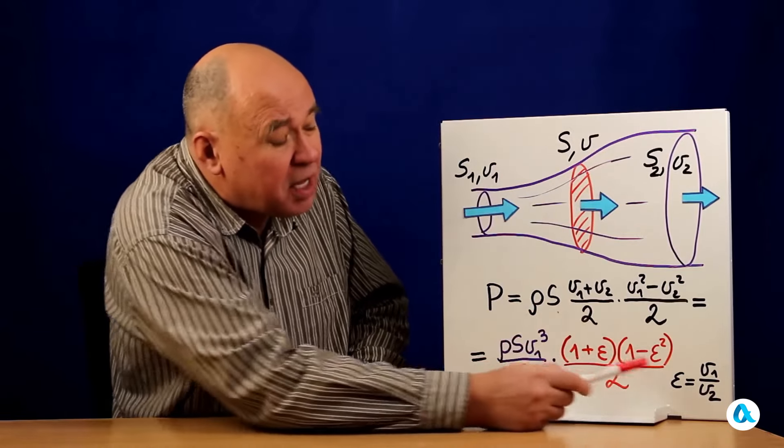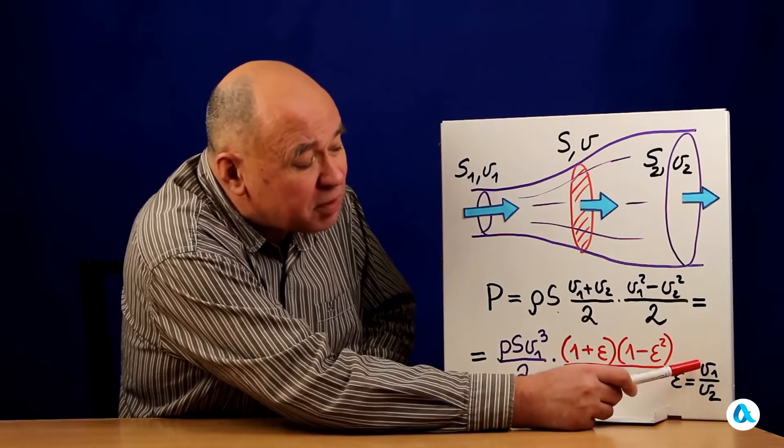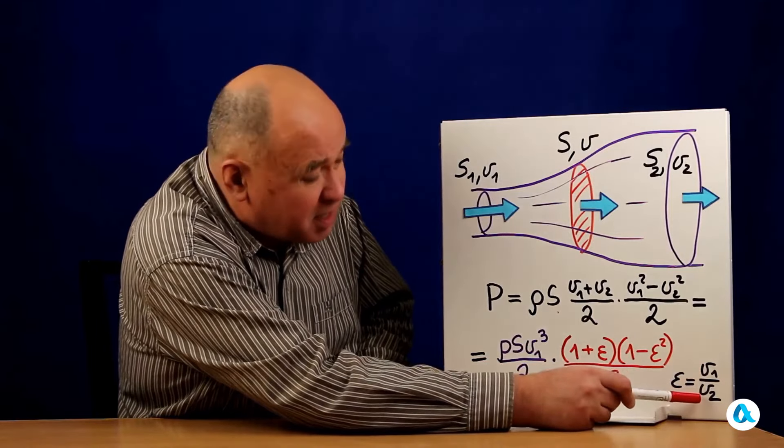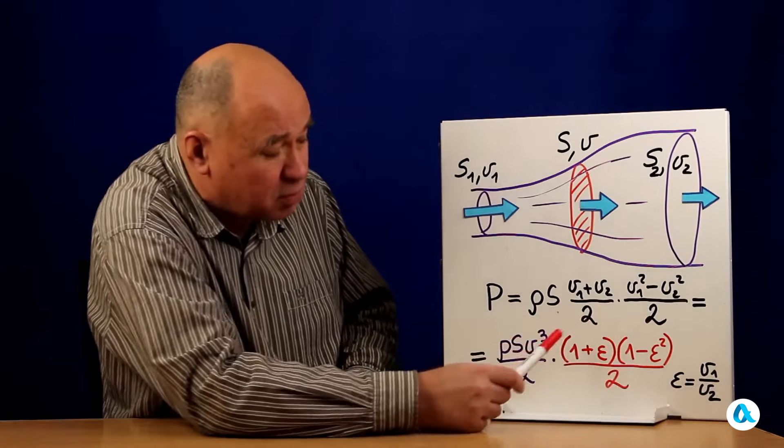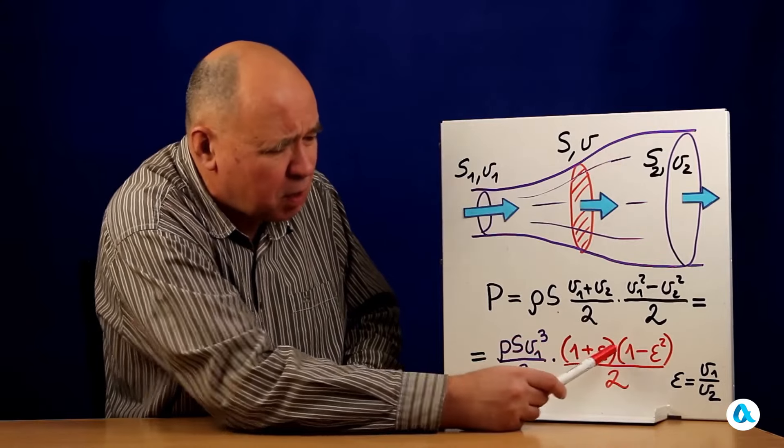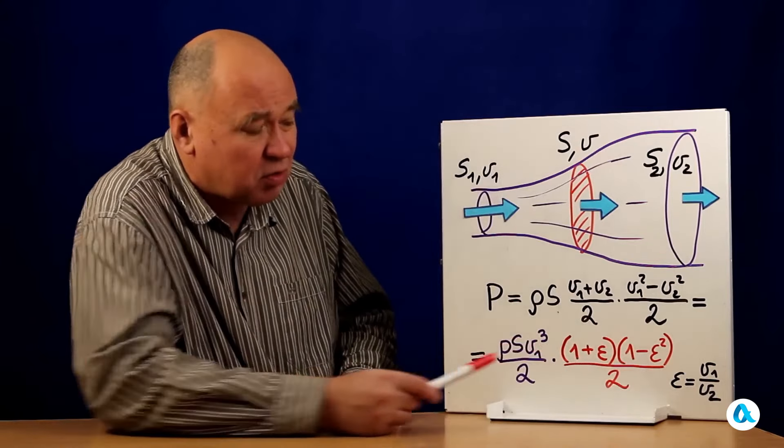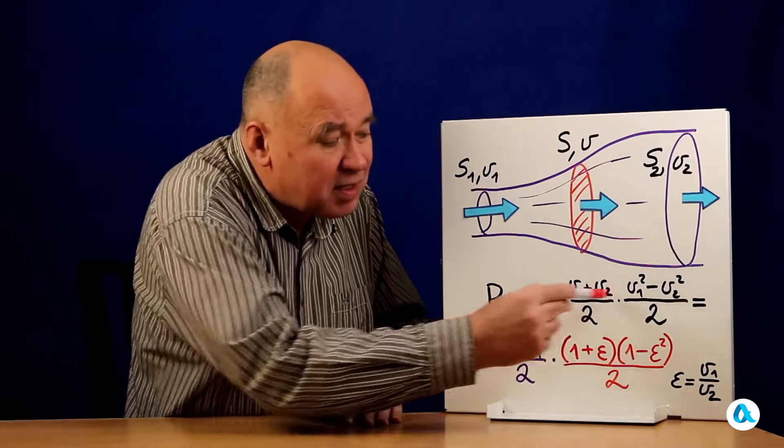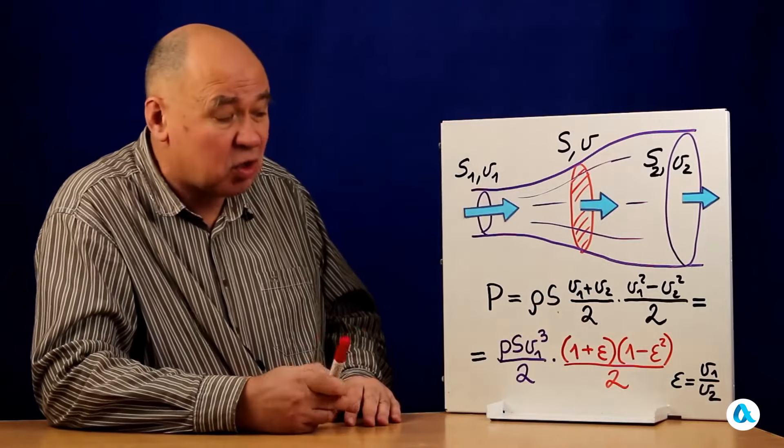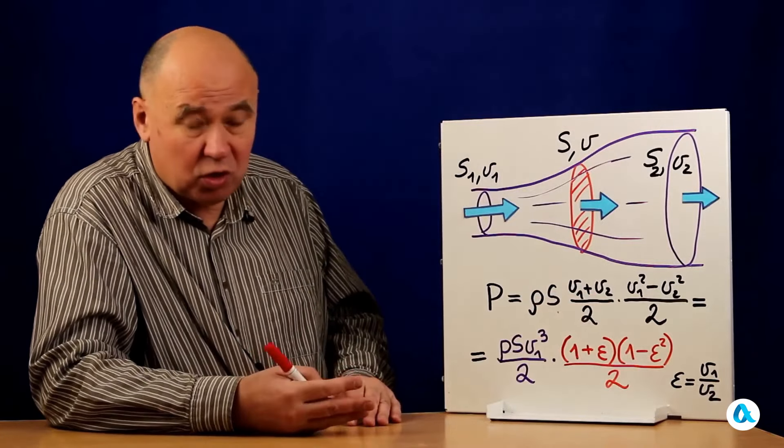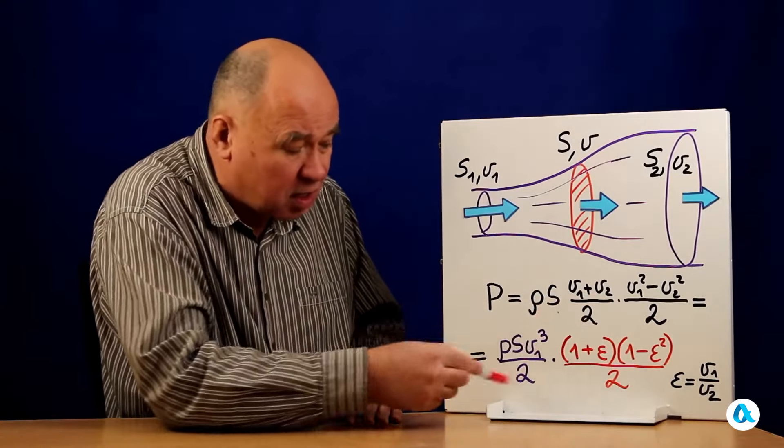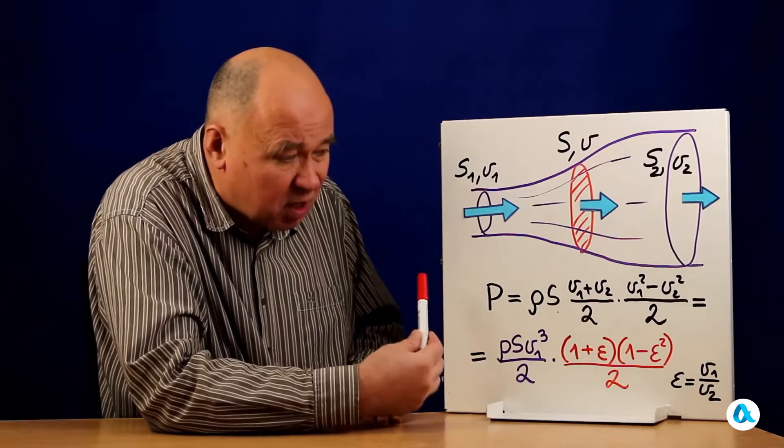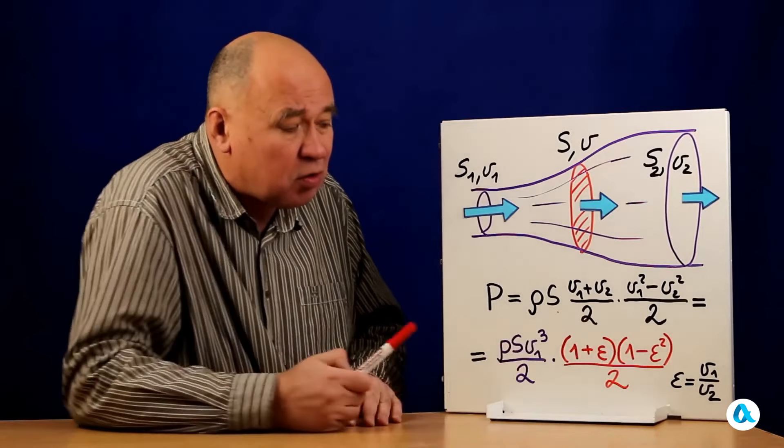And here remains this kind of multiplier. In it, I have denoted the ratio of speeds by epsilon. v₁ is the initial speed, v₂ is the final speed. This bracket, 1 plus epsilon over 1 minus epsilon squared divided by 2, and this is the coefficient that shows what portion of the wind's energy we extract in this idealized model at a given ratio of speeds v₁ to v₂.